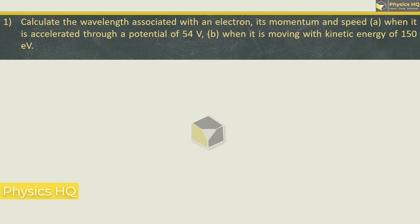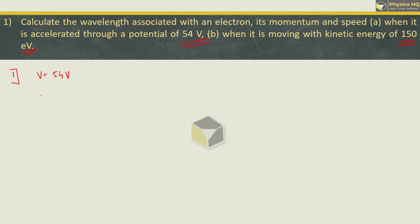Let us start with the first sum: calculate the wavelength associated with an electron, its momentum and speed when it is accelerated through a potential of 54V, and when it is moving with a kinetic energy of 150 eV. In the first case, we are given that the potential applied is 54V. To calculate wavelength, we use the simple formula: 1.228 divided by the square root of the applied voltage.